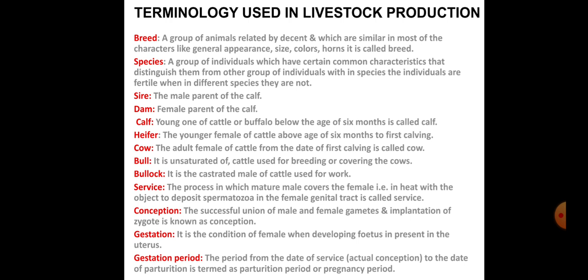Conception means the successful union of male and female gametes. The male and female gametes fuse and form a zygote, and implantation of the zygote occurs — it is called conception. Gestation is the condition of the female when the developing fetus is present in the uterus. The gestation period is the period from the date of service or conception to the date of parturition — it is called the pregnancy period.